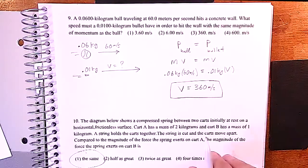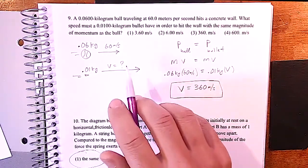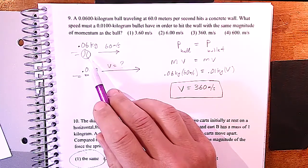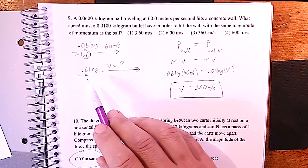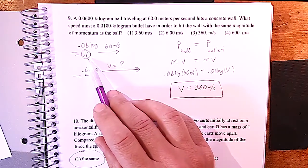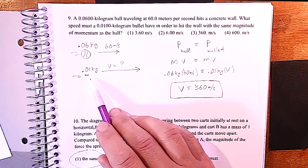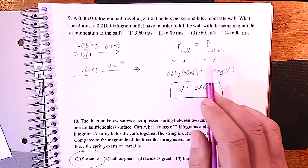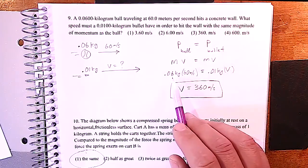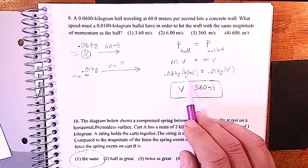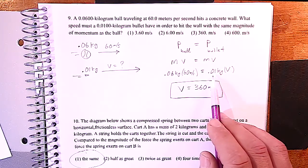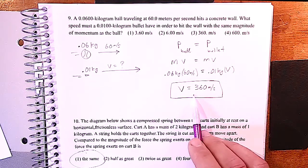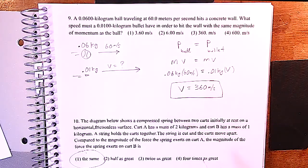We did a question similar to this in the lesson — how could a ball have the same momentum as a bullet? If the ball has much more mass, the bullet must have much more velocity. You set the momentum of the ball equal to the momentum of the bullet: 0.06 times 60. The lower mass of the bullet means we must have a much larger velocity to achieve the same momentum.